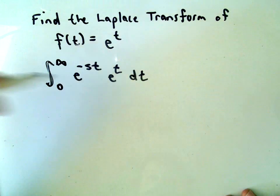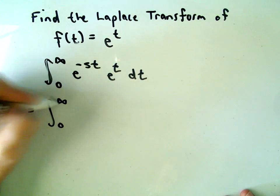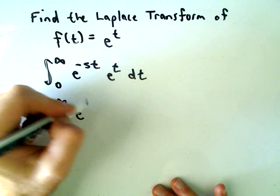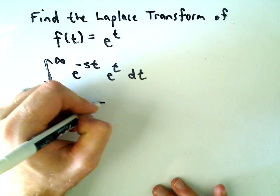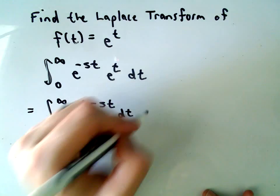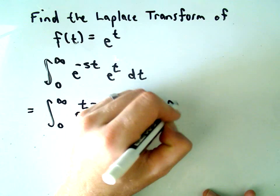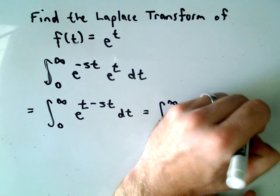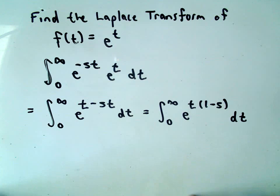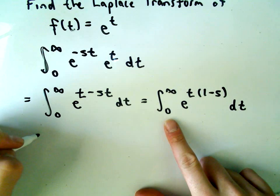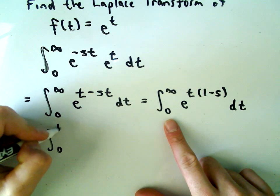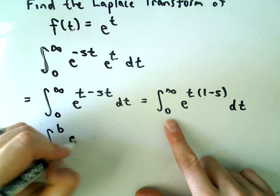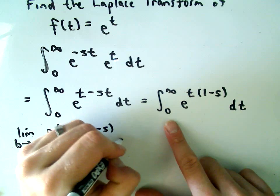I'm going to rewrite this integral from 0 to infinity. Since we have like bases, I'll add the exponents and write that as e to the t minus st. I'll factor out the t, leaving the quantity 1 minus s. For the improper integral, we replace infinity with variable b and take the limit as b goes to infinity of the integral from 0 to b of e to the t times (1 minus s) dt.